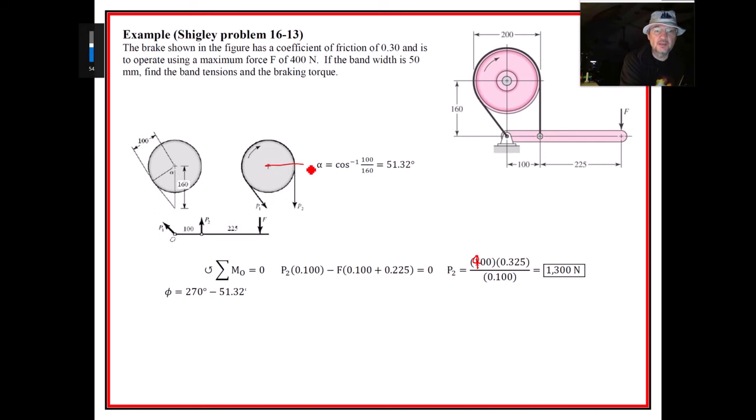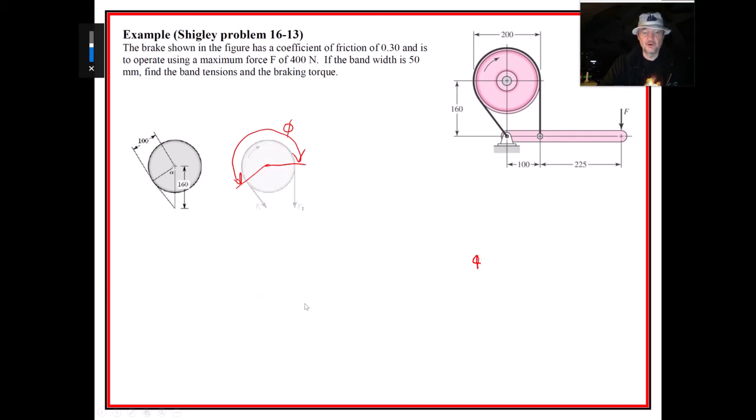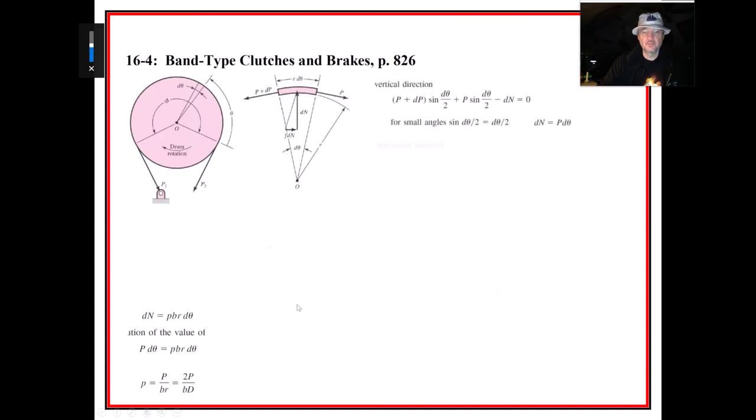The angle that we found, the actual wrap angle, is going to be from here to there, this angle Phi. We're going to need that in radians. It comes out to 218.7 degrees, but we multiply by pi divided by 180 and get 3.817 radians.